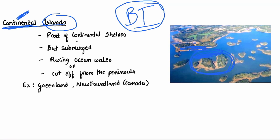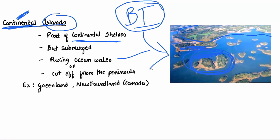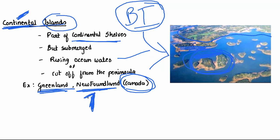Continental islands were part of continental shelves. There are two reasons they separated: one is rising ocean waters, and the other is being cut off from a peninsula due to tectonic movements. British Isles and Greenland are examples. Newfoundland is an island in Canada — there is also a dog breed called Newfoundland, which can help you remember it.